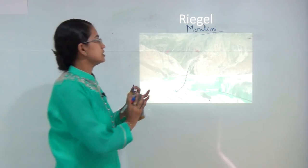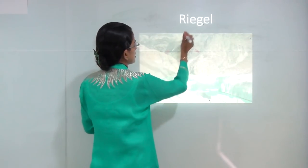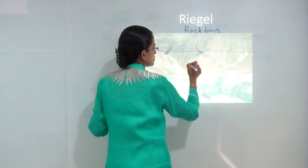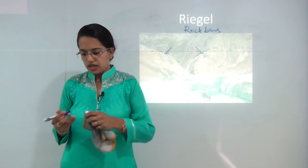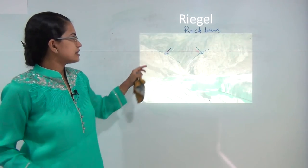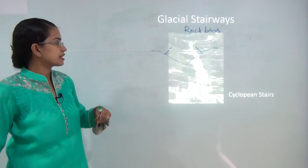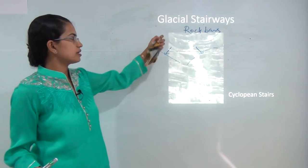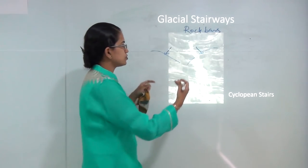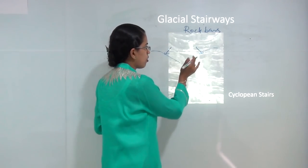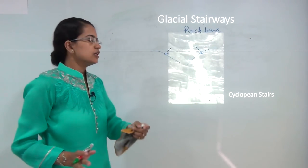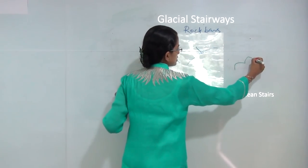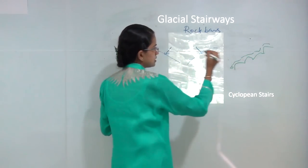Riégels are rock bars that you can see. The glacier moves through this region and these rock bars are towards the surface of the glacier. They are also known as thresholds. When there are continuous rock bars, they create a feature known as glacial stairways. The glacier moves from a stepped landform — it cuts the rock in such a fashion that differential erosion creates a stepped feature.